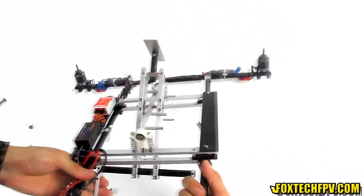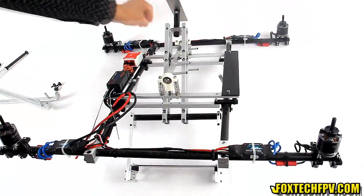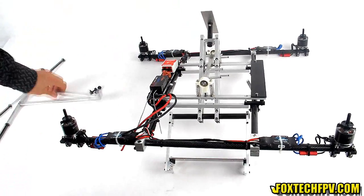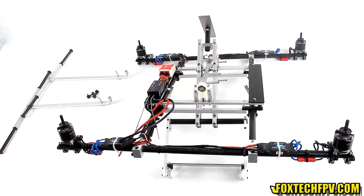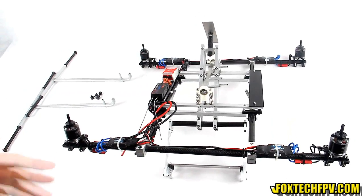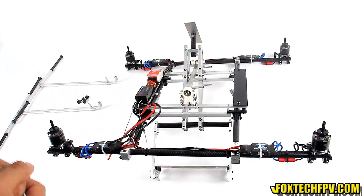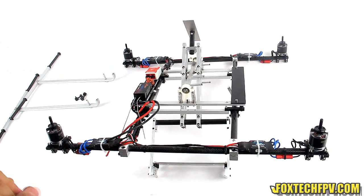So this makes the frame look a bit smaller and easier for transportation. Thanks for watching. This is the FoxTech Glider 600 quadcopter frame based on the isolate theory for the gimbal part. Thanks for watching, have a nice day, and bye.